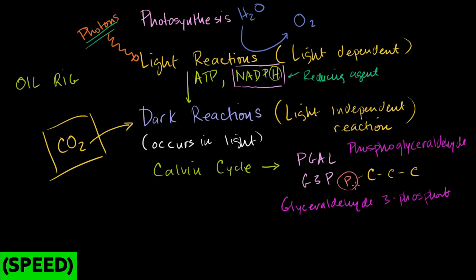The first end product of photosynthesis was this 3-carbon chain, this glyceraldehyde 3-phosphate, but then you can use that to build up glucose or any other carbohydrate.